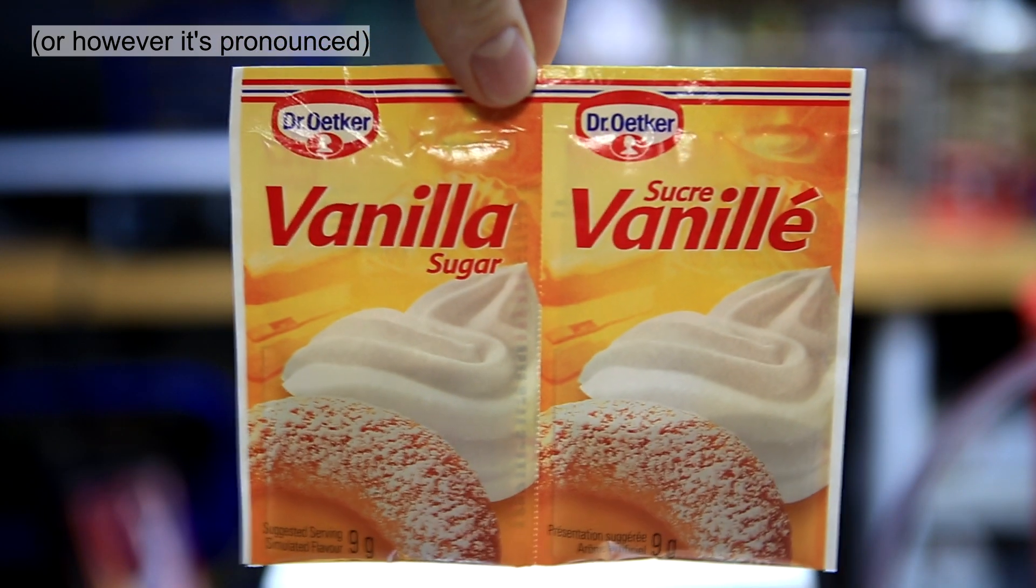For this experiment I used 18 nine-gram packets of vanilla sugar and 350 milliliters of methanol. I used Dr. Oetker vanilla sugar but you can use any kind as long as the only ingredients are artificial flavoring and sugar.